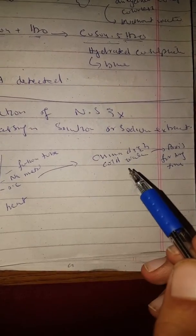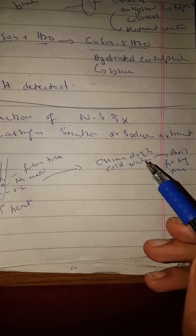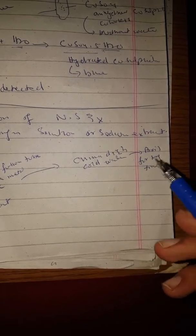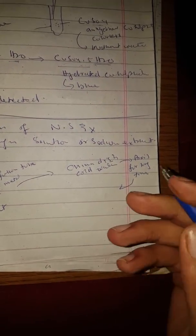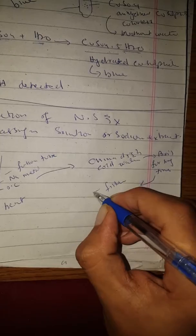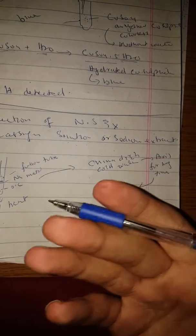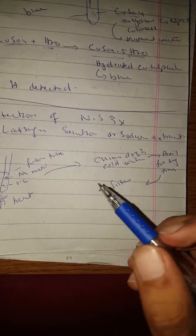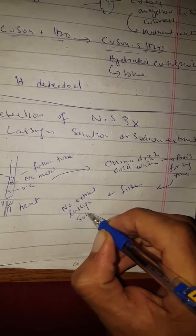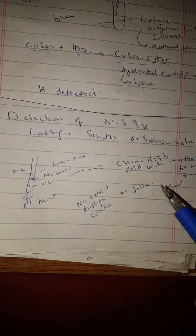When it becomes red hot, we put the liquid into the china dish with water. We then filter the liquid and remove the glass particles. From the filtered solution we obtain the sodium extract, also called the Lassaigne solution.